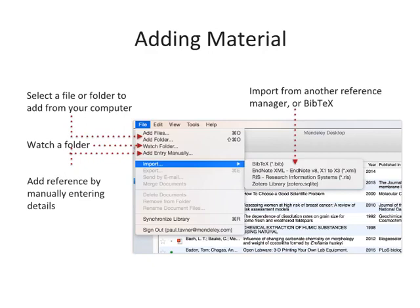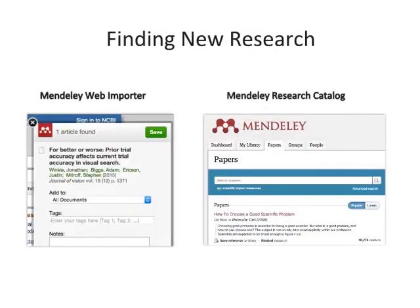You can also easily import a library from other reference managers. So if you've tried out EndNote, Reworks or another solution and found them not to your liking, you can carry across your library to Mendeley easily. You also have the option to create a reference manually, which will allow you to complete a number of fields by hand. Mendeley makes it easy for you to continue building your library. The Web Importer is a bookmarklet that you can add to your web browser. When you click on this item in your browser's favourites, the Web Importer will attempt to detect references on the page you're viewing and ask if you want to add them to your library. You can also use it to add web pages to your library.